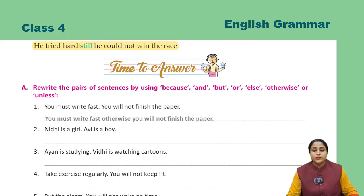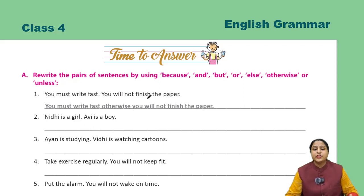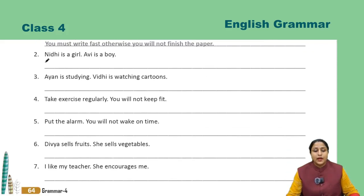Now it's time to answer. Rewrite the pairs of sentences by using because, and, but, or, else, otherwise, or unless. Yahaan par do sentences given hain — aapko given conjunctions ka use karke in sentences ko join karke dubara likhna hai. First: You must write fast, you will not finish the paper — answer: You must write fast, otherwise you will not finish the paper.